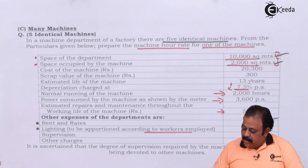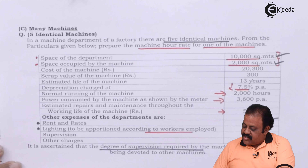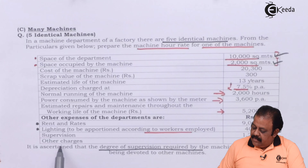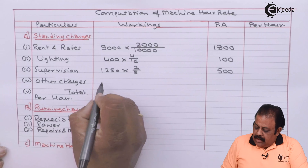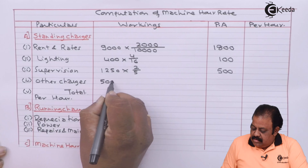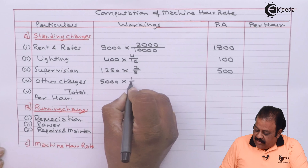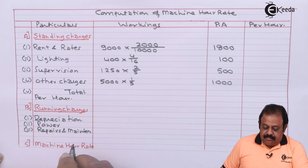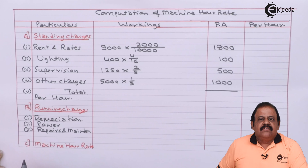Supervision charges are Rs. 1,250. It is ascertained that the degree of supervision required by the machine is two-fifths, giving Rs. 500. Other charges are Rs. 5,000. There are 5 machines, therefore one-fifth applies, giving Rs. 1,000.